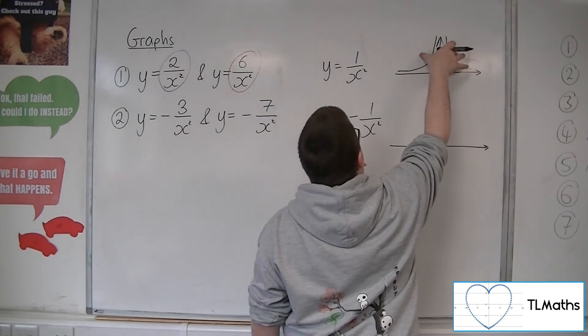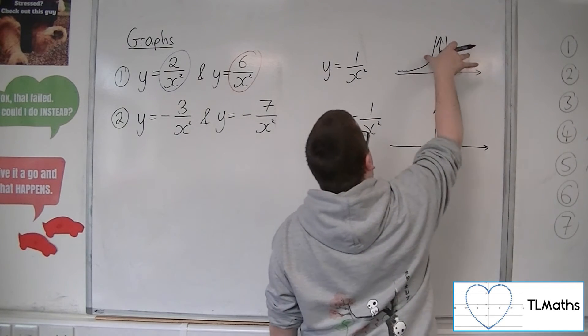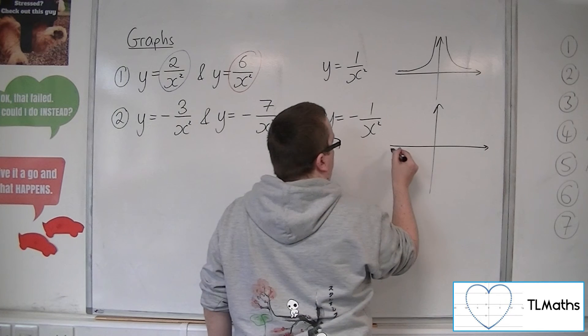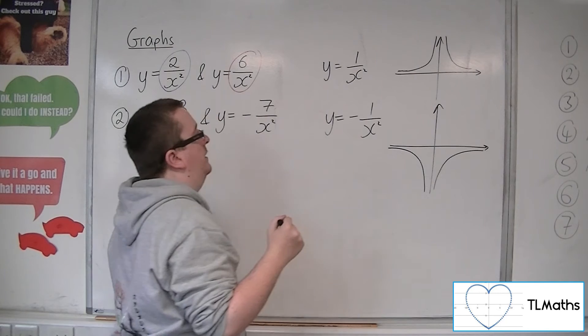so they are positive currently. But when I put a minus in front, they will become negative. And so it will reflect the graph in the x-axis. So now the graph will look something like that instead.